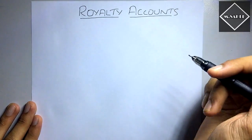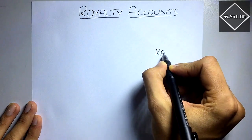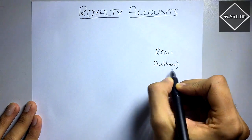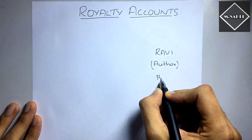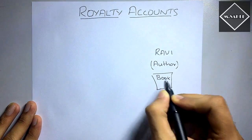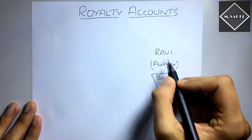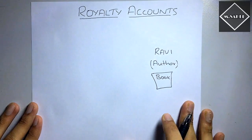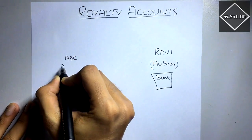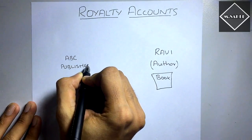To understand the concept in more detail, let's say there is a person called Ravi who is an author by profession and he has written a book. He has written a book and this Ravi now wants to print and publish this book. So what he does is he contacts this company called ABC Publishers.